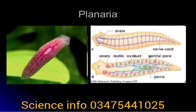Planaria is a free-living flatworm with cilia on its outer surface. It feeds on animals and dead and decaying matter. It moves by cilia present on its underside.